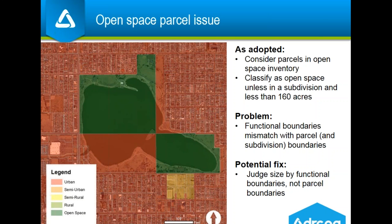Here's another example: Sloan's Lake. As adopted, the language is asking us to look at parcels in the open space inventory. But the open space inventory isn't made up of parcels — it's the actual functional boundaries of our open spaces and parks. So if we're judging open space by parcel size, we can get some interesting results. Another wrinkle is that we're asked to look at open space and subdivisions differently — Sloan's Lake, much like other parks, never went back through a subdivision process to make it one unified parcel, so significant pieces of it are categorized as urban by the model.